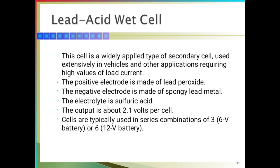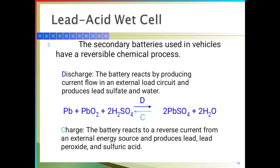This is the reactions. Secondary batteries used in vehicles have a reversible chemical process. The forward reaction is the discharging reaction and the backward reaction is the charging reaction. Discharging means when using the batteries, energy will be drawn down. The batteries react by producing a current flow in the external load circuit, producing lead sulfate and water. That is the reaction: Pb + PbO₂ — lead plus lead oxide — using sulfuric acid, forms lead sulfate and water. When the batteries go dry, we can recharge again. During recharging, lead sulfate reacts with sulfuric acid to produce lead and lead peroxide and sulfuric acid again.